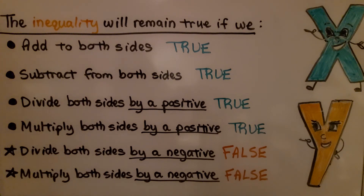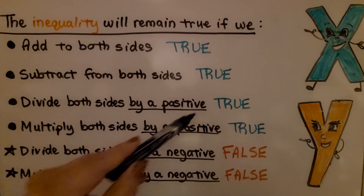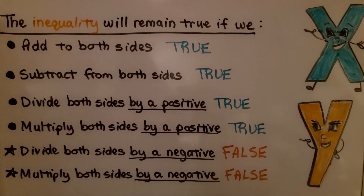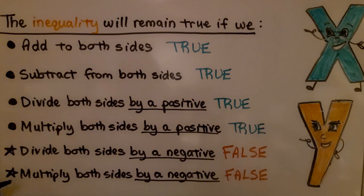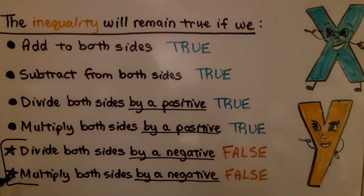Let's review these statements. The inequality will remain true if we add to both sides — yes, true. Subtract from both sides — yes, true. Divide both sides by a positive — yes, true. Multiply both sides by a positive — yes, true. Divide both sides by a negative — no, that's false. And it's also false if we multiply both sides by a negative. We would need to switch the direction of the sign for these. If we switch the direction of the sign when we divide or multiply by a negative, then we will make them true.